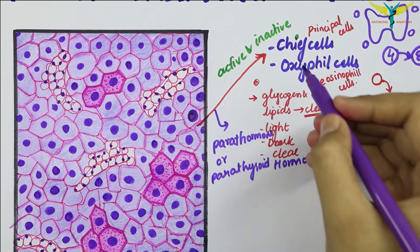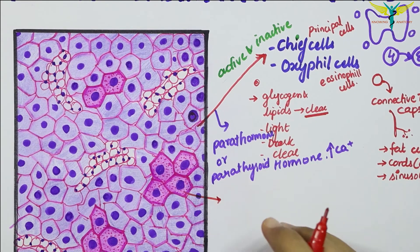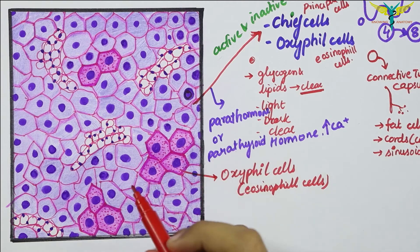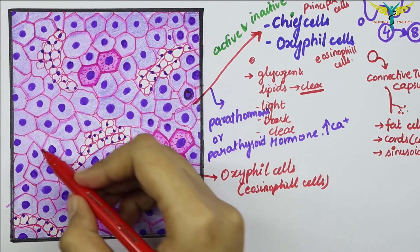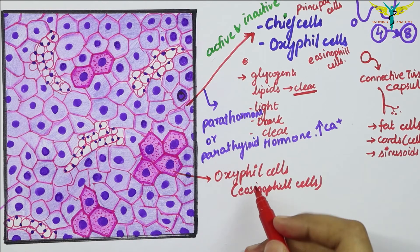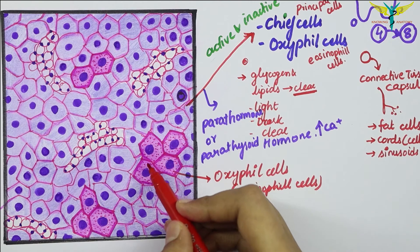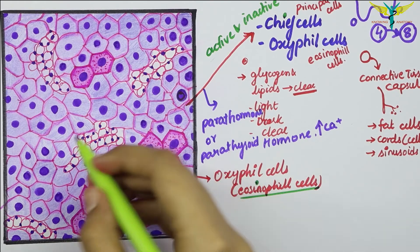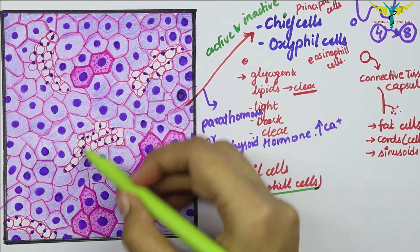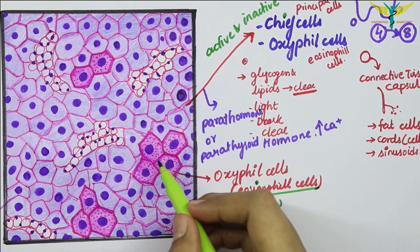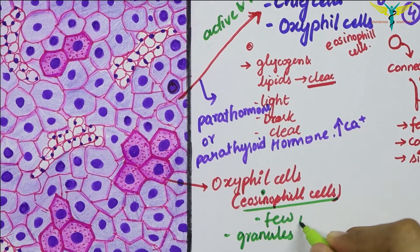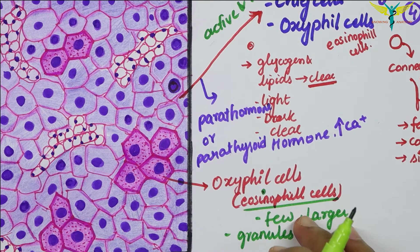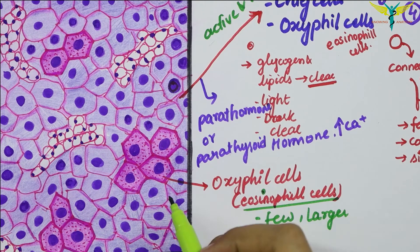The second type of cell is the oxyphil cell, also called eosinophil cells. The parathyroid gland is made up of masses of cells with numerous capillaries in between. Oxyphil cells appear as large eosinophilic or pink cells which are few in number. They are much larger than the chief cells and contain granules that stain strongly with acidic dyes.